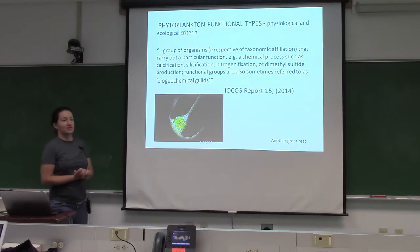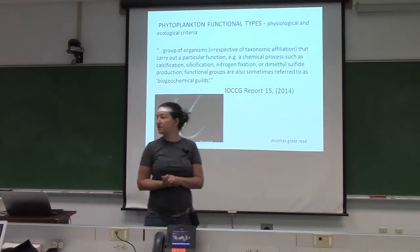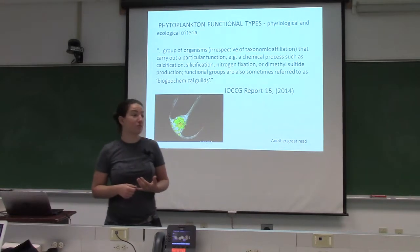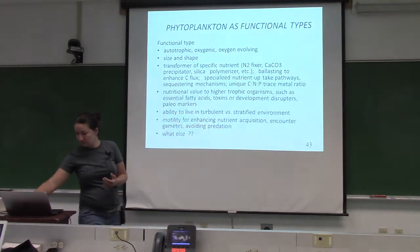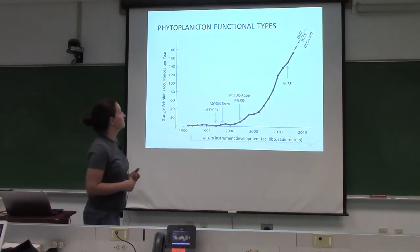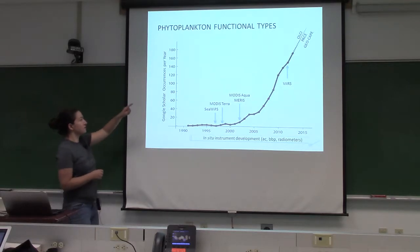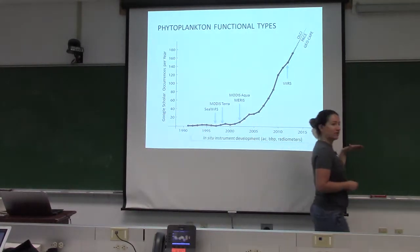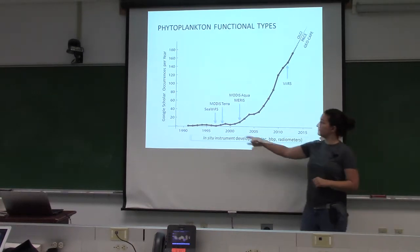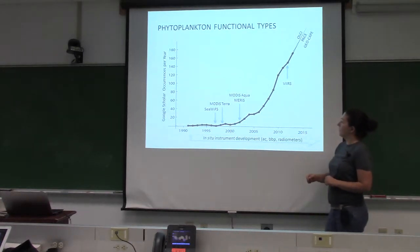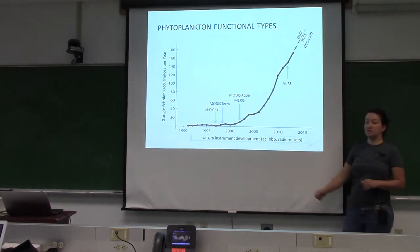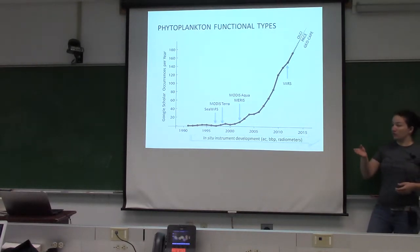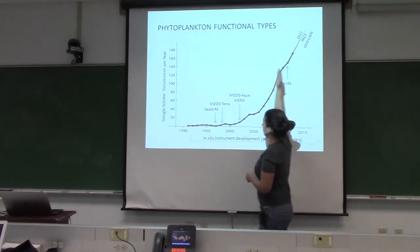How many people are doing their PhD in phytoplankton functional types? Three, four — not bad. The number of phytoplankton functional type publications in Google Scholar per year has been increasing spectacularly. You can see bumps with the launch of satellites, and with in situ instrument development allowing hyperspectral and multispectral data collection parallel to phytoplankton community structure. It's just going to keep going higher.